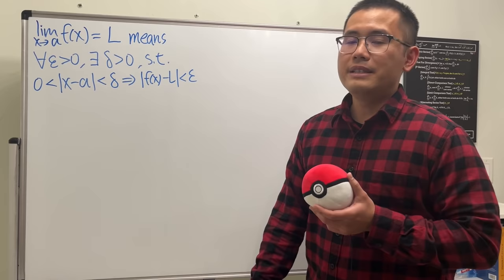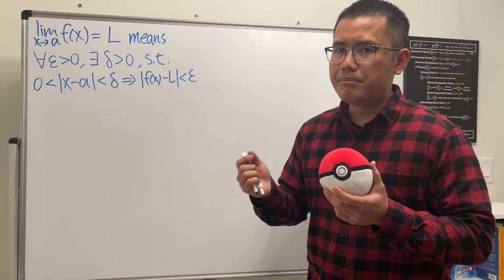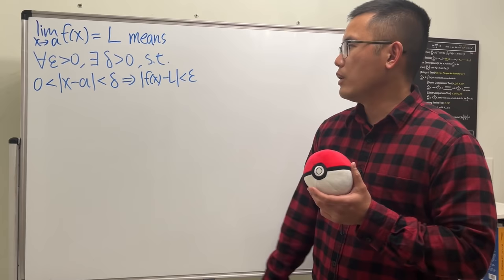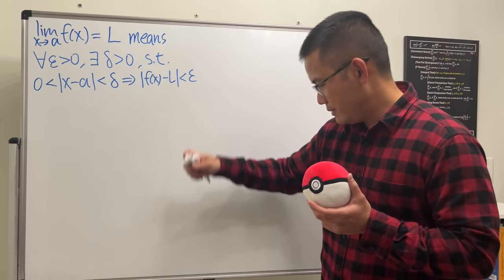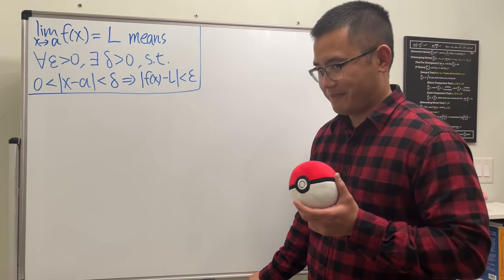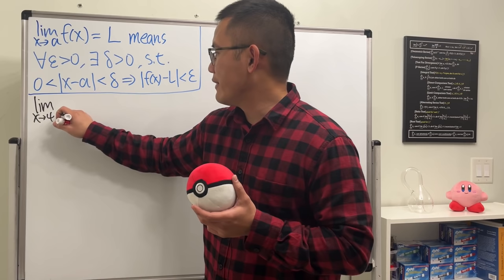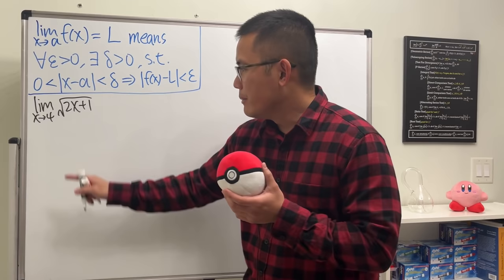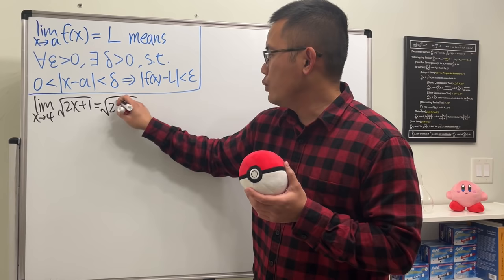It's hard to explain without an example, so let's use one with a picture and actual numbers. Consider the limit as x approaches 4 of the square root of 2x plus 1. To figure this out: the square root function is continuous, so we can just plug in 4 — we get the square root of 2 times 4 plus 1, which gives us 3.